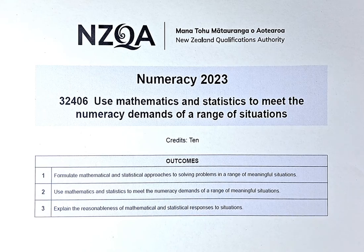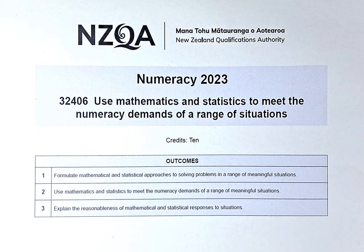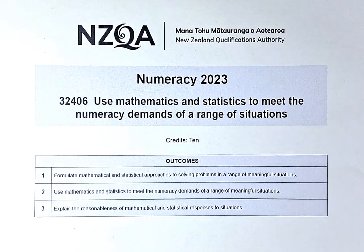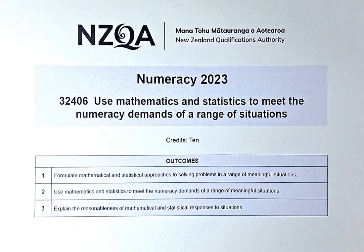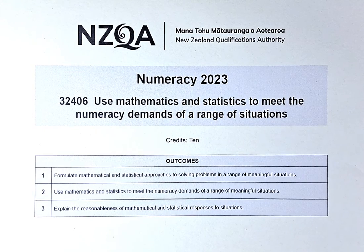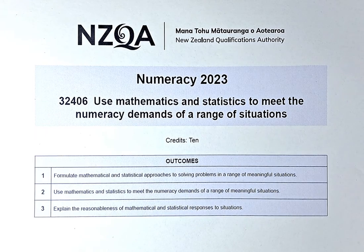There are three outcomes: Outcome 1 - Formulate Mathematical and Statistical Approaches to Solving Problems in a Range of Meaningful Situations. Outcome 2 - Use Maths and Stats to Meet the Numeracy Demand of a Range of Meaningful Situations. Outcome 3 - Explain the Reasonableness of Mathematical and Statistical Responses to Situations.